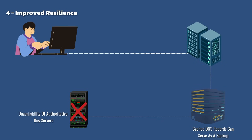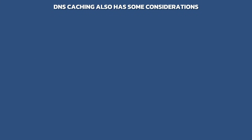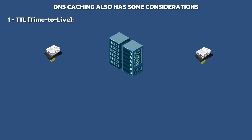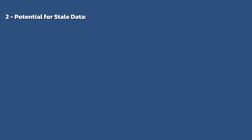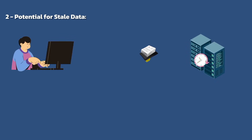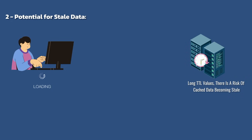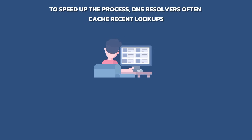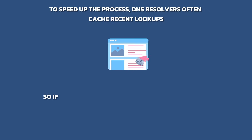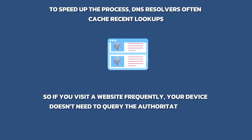However, DNS caching has some considerations. DNS records have a TTL (Time to Live) value, which specifies how long the resolver should cache the record before considering it stale. When the TTL expires, the resolver must discard the cached record and fetch updated information from authoritative servers to ensure accuracy. If DNS records change frequently but have long TTL values, there is a risk of cached data becoming stale, causing users to experience issues accessing updated resources until the cached records expire. DNS resolvers often cache recent lookups, so if you visit a website frequently, your device doesn't need to query authoritative DNS servers every time.